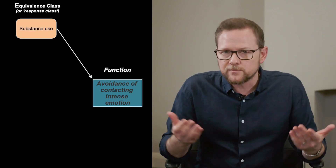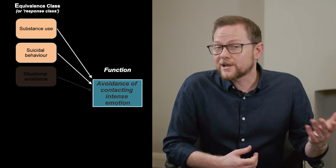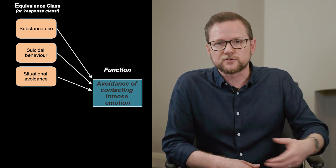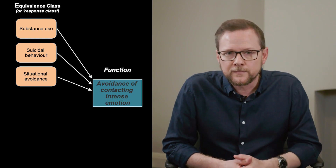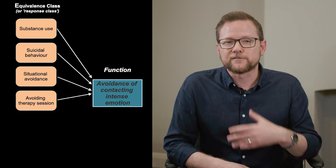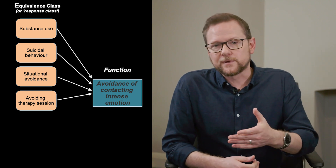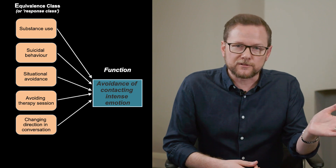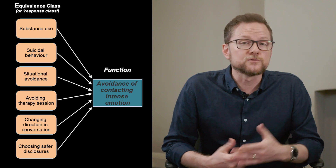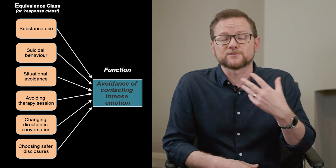This client may do a whole bunch of things to try to avoid or not make contact with intense emotions. Some of those things might include substance use, self-harm, suicidal behaviour, or situational avoidance — like not engaging in social activities due to fear of being judged. It might also include avoiding therapy sessions, changing direction in a conversation with the therapist, or being selective about the information they disclose so the therapist won't ask questions that might elicit more distress.